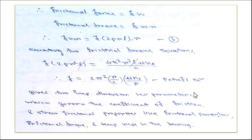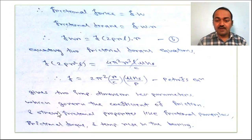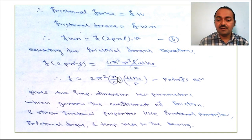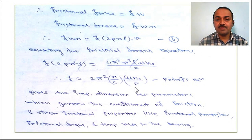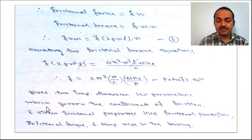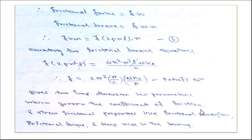Petroff's equation gives two important dimensionless parameters. One is R/C, where R is the radius of the journal and C is the radial clearance, both in mm. The other is μ·ns/p, where μ is in MPa·s, ns is in revolutions per second, and p is in N/mm². These parameters govern the coefficient of friction and other frictional properties like frictional power loss, frictional torque, and temperature rise in the bearing.